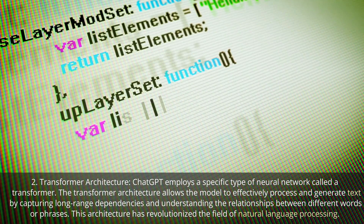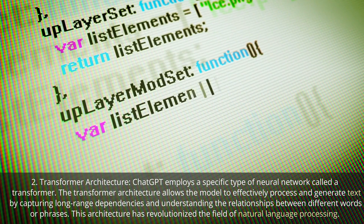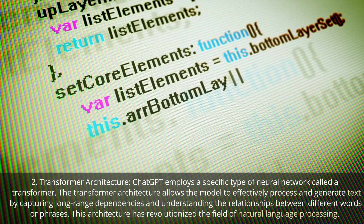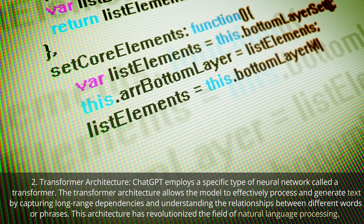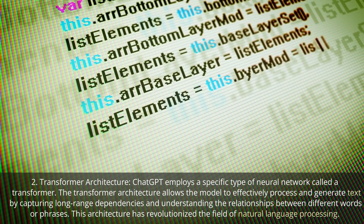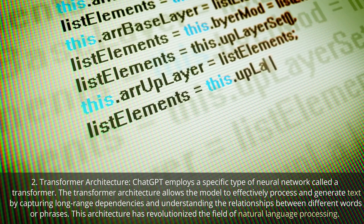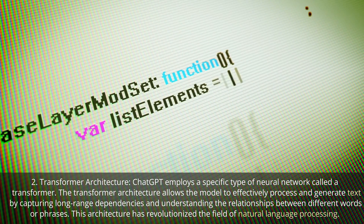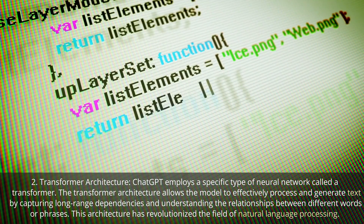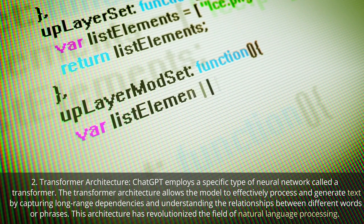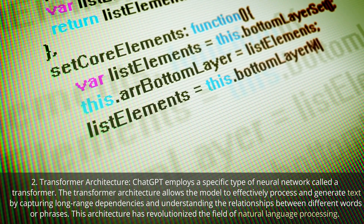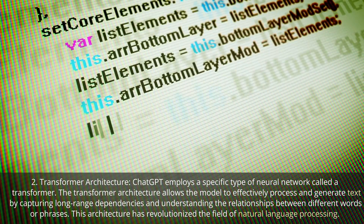Transformer Architecture. ChatGPT employs a specific type of neural network called a transformer. The transformer architecture allows the model to effectively process and generate text by capturing long-range dependencies and understanding the relationships between different words or phrases. This architecture has revolutionized the field of natural language processing.